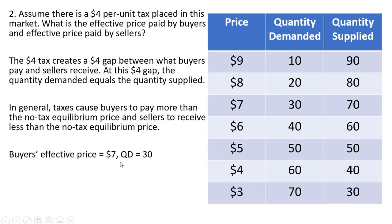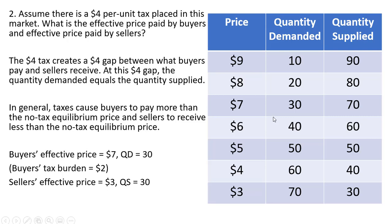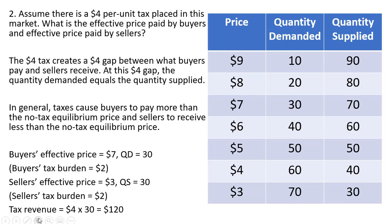The buyer's effective price is $7 with quantity demanded of 30. The tax burden on buyers is $2 — before, buyers were only paying $5 for this product, and now they're paying $2 more, or $7. The seller's effective price is $3; taxes create a wedge between what buyers pay and sellers receive. Sellers were getting $5 and now are getting exactly $2 less per unit sold, so the seller's tax burden is $2. For tax revenue, 30 units are being bought and sold and the government is collecting a $4 tax per unit, so the government is collecting $120 of tax revenue.